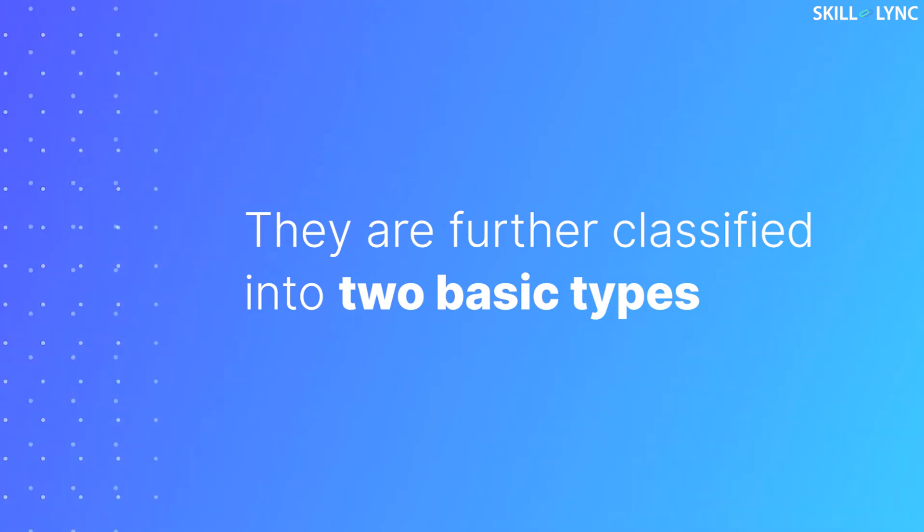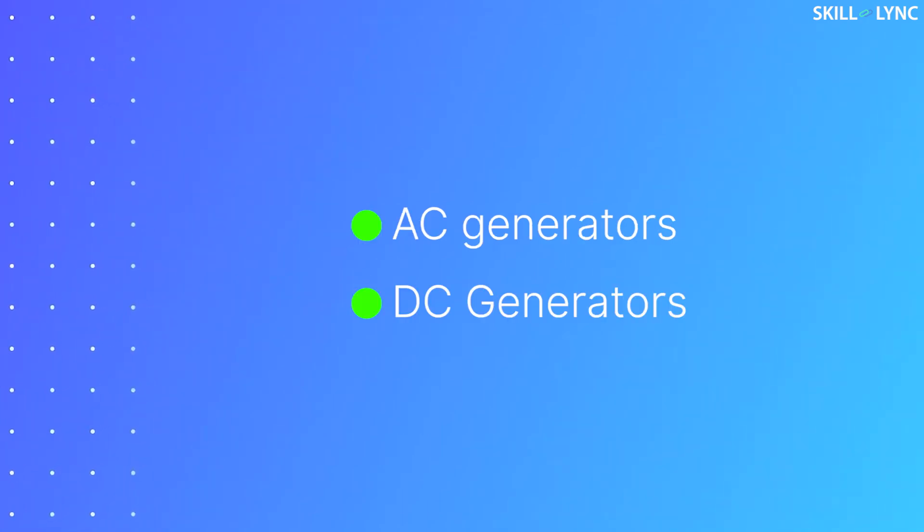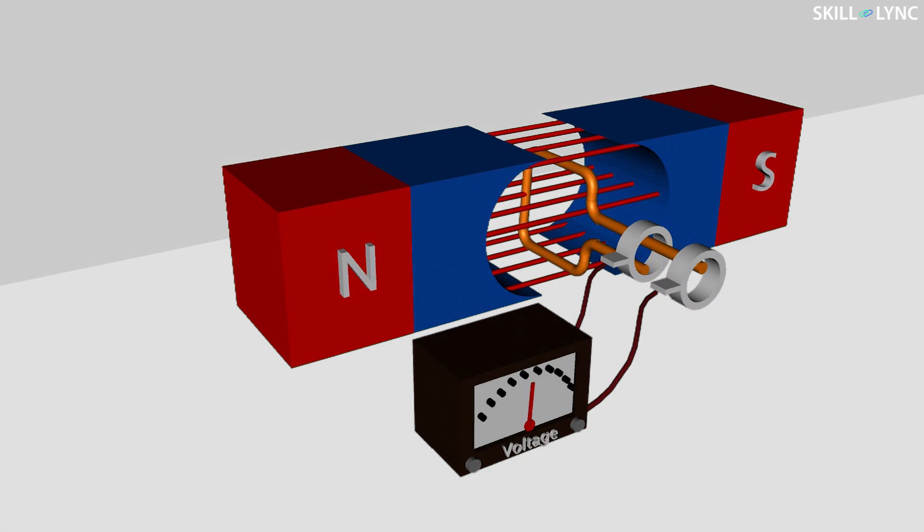They are further classified into two basic types: AC generators and DC generators. The first type of generator, that is the AC generator, consists of magnetic poles between which a rotating armature is placed. The armature is rotated and an induced EMF is developed in the armature by Faraday's law, which is collected via the split rings. The electricity produced by AC generators is alternating in nature.